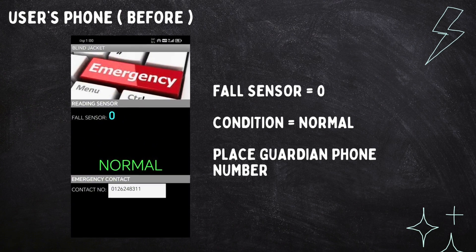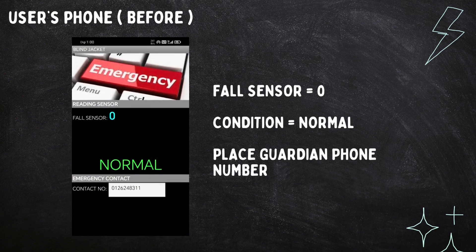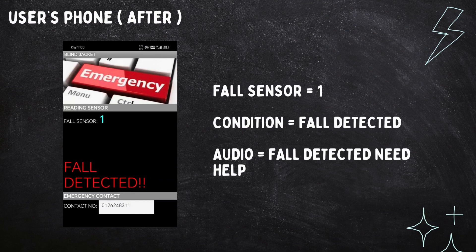We have to place the guardian's phone number there for the next step. This is what happens when the user falls down or hits somewhere: the fall sensor changes to one and the condition changes from normal to fall detected. It will also produce an audio alert saying: 'Fall detected, need help.'